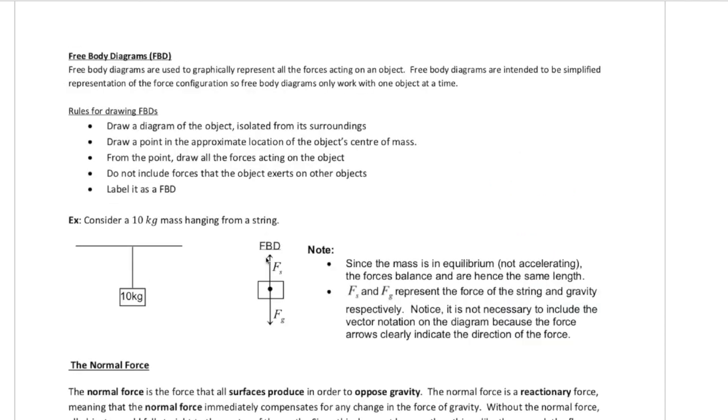The next concept we have to deal with is something called a free body diagram. Whenever we're solving problems in physics, especially specifically with dynamics, I should say, is that we need to actually have an analysis of what is happening with the objects in terms of the forces acting on them. So here are some of the rules for these free body diagrams. You draw a diagram of the object, and this is a key, isolated from its surroundings. You draw a point in the approximate location of the object's center of mass. From that point, draw all the forces acting on the object. And all the forces acting specifically on the object. Do not include the forces that the object exerts on other objects. And then we label it FBD.